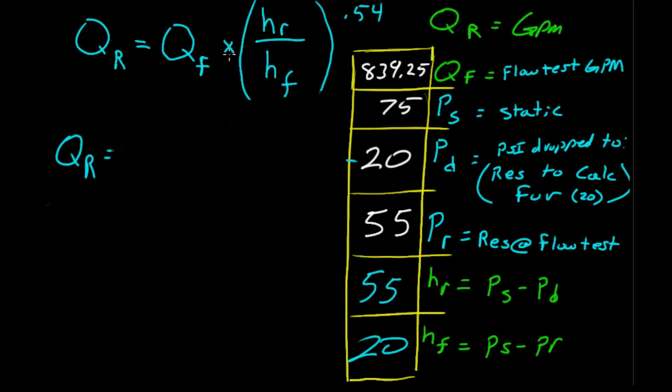QR equals QF times H sub R over H sub F. And you can say Q sub F, Q sub R. That's actually the proper way. But if you say QF and QR, we'll know what you're talking about. So, our QF in our original equation, non-simplified, or actually this is a simplified equation, is 839.25 gallons a minute, times our HR is PS minus PD is 55. Now, our HF number, PS minus PR is 20, 0.54.